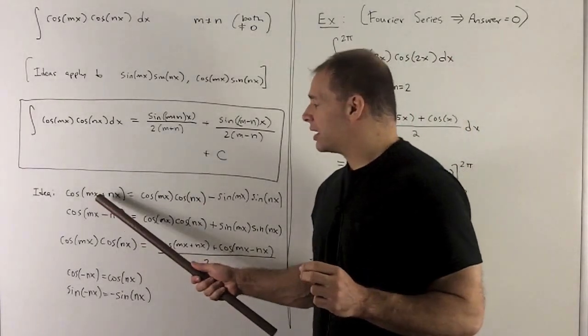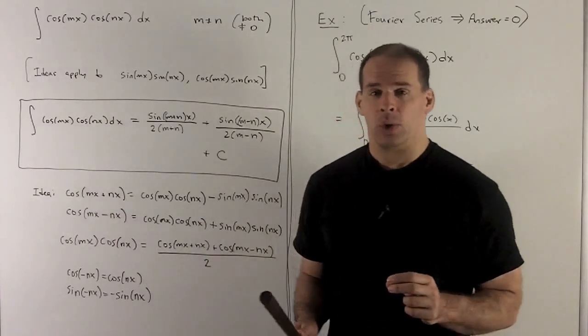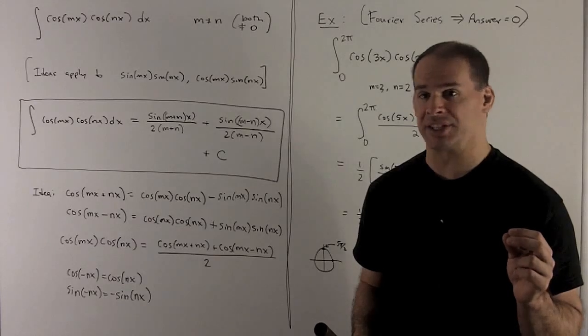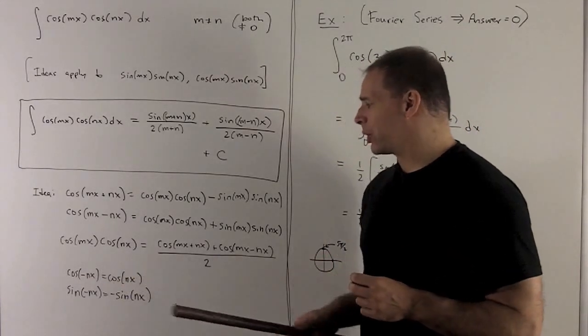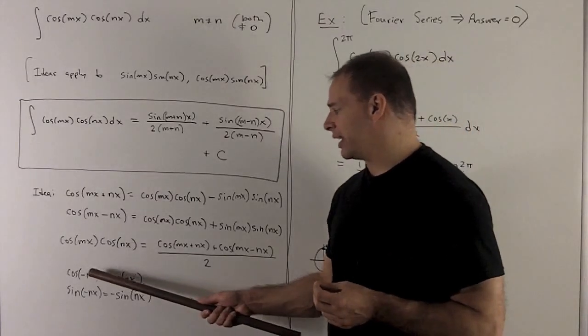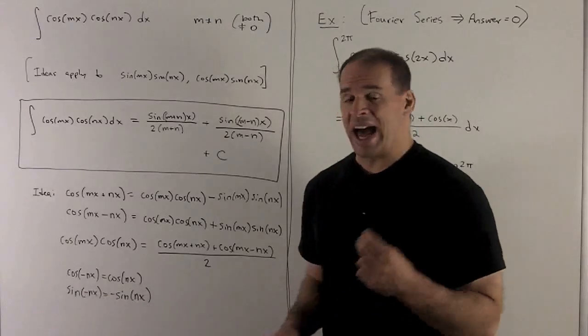All right, once I have this, I'm going to do the difference of the angles inside of cosine, which we can get from the same rule as long as we remember how minus signs work inside of cosine and sine. So, remember, cosine of minus nx is just equal to cosine nx. Cosine is an even function, so minus signs on the inside just disappear.